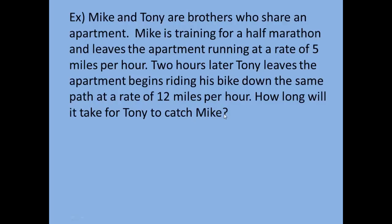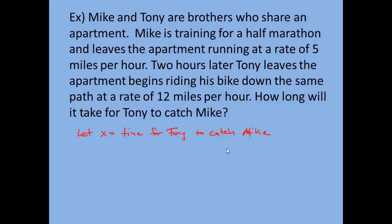First, when we say how long will it take for Tony to catch Mike, that's what we're really looking for. So we should let our variable equal that. Let x equal the time it takes for Tony to catch Mike. Now realize that if we're trying to figure out how long it takes them to catch up to each other, that means they have to travel the same distance. So when Tony catches Mike, they've traveled the same distance. We want an expression for Tony's distance, an expression for Mike's distance, and then set them equal to each other.